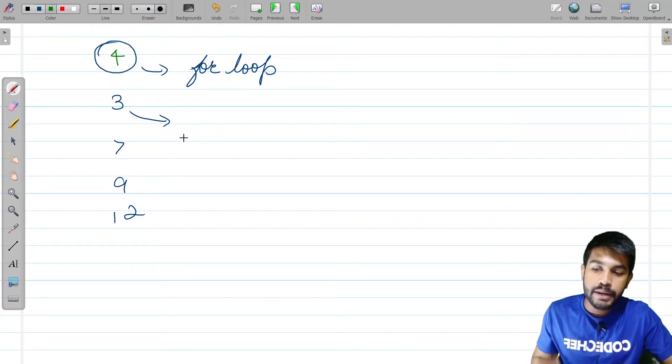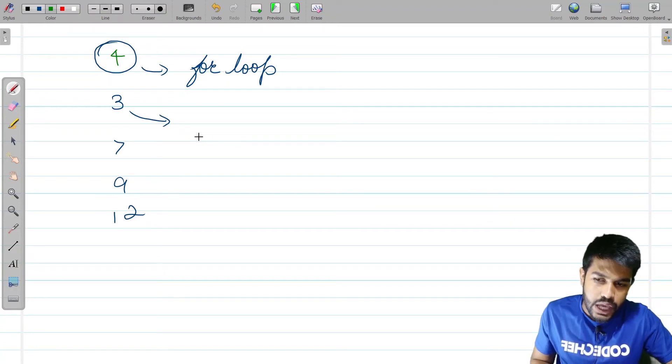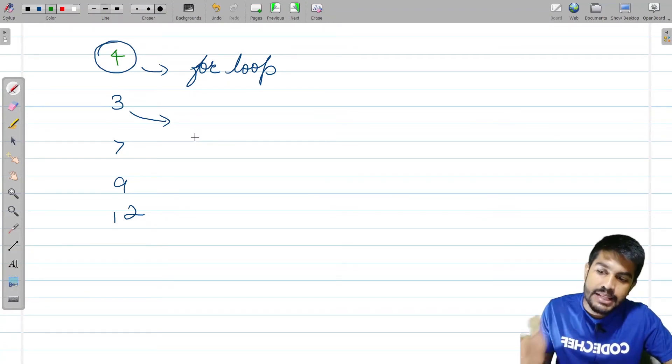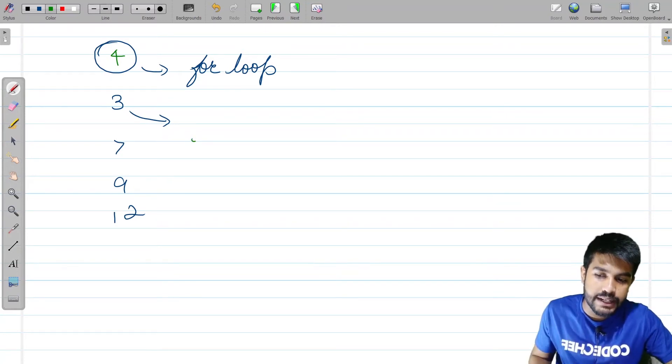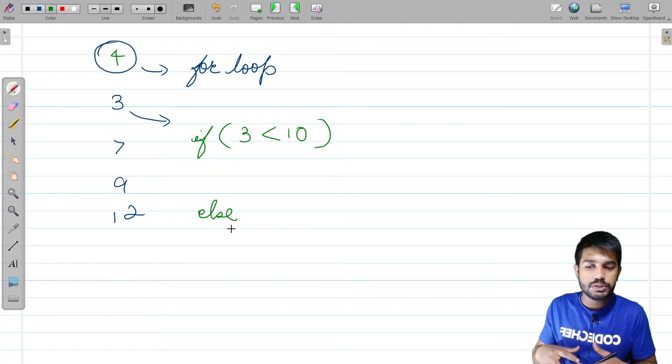Now we would be considering only 3 itself. Suppose it is 3, so if 3 is less than 10, in the same way it would be implemented. If 3 is less than 10, then we would print thanks for helping chef, else minus 1. If the normal if else is used, we can implement this.